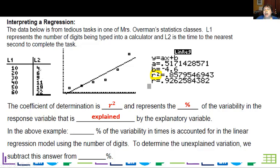And it represents a percent of the variability in the response variable that is explained by the explanatory variable. So in other words, the 4 going all the way up to 32, in our case, 85% of that is explained by 10 going all the way up to 60. So in this example, 85.8% of the variability is accounted for in the linear regression model using the number of digits. Now, if I want to know an unexplained variation, I just subtract that answer from 100%.